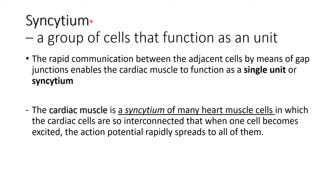To summarize: syncytium, where cyto means cell, is a term that means a group of cells that function as a single unit. The rapid communication between adjacent cells by means of gap junctions enables the cardiac muscle to function as a single unit or a syncytium. The cardiac muscle is thus a syncytium of many heart muscle cells in which, when one cell becomes excited, the action potential rapidly spreads to all of them, enabling them to function together as a single contractile unit.